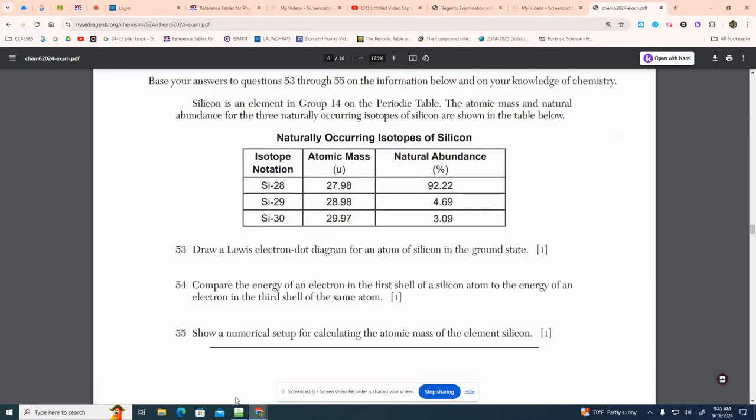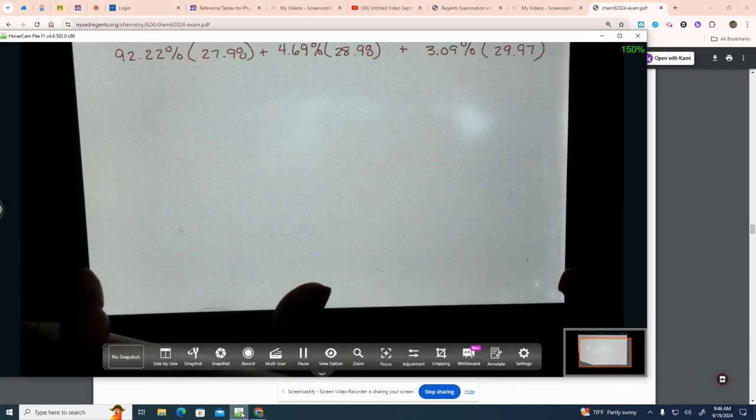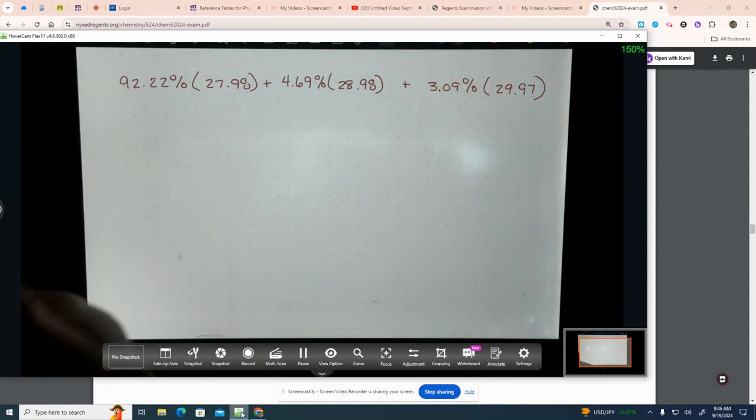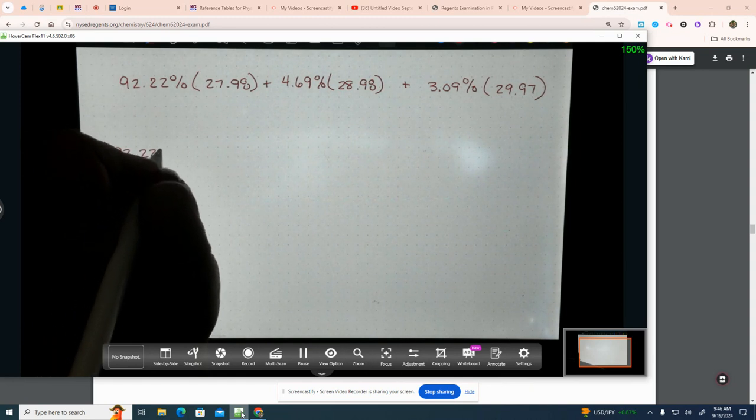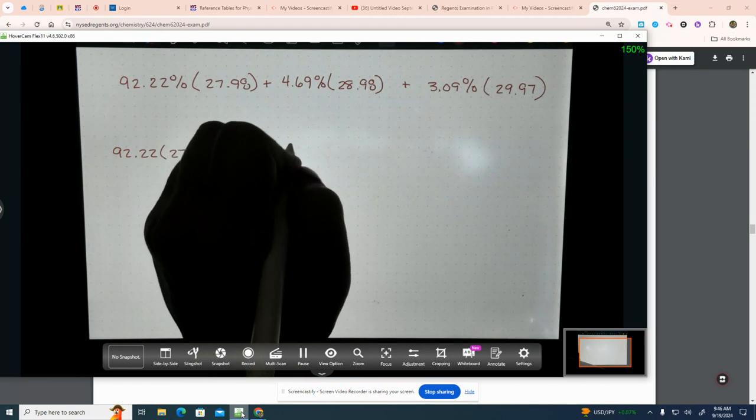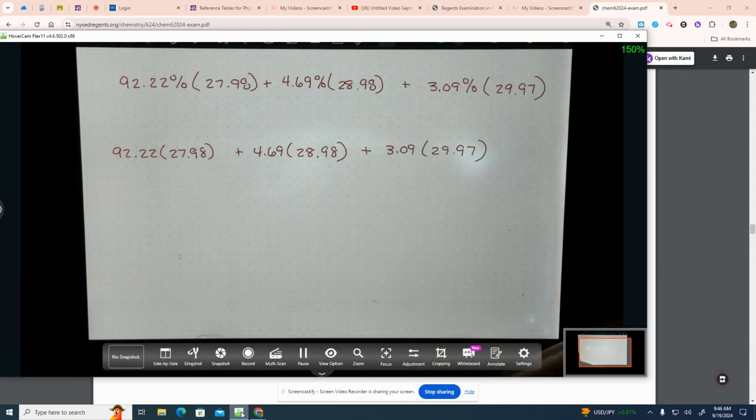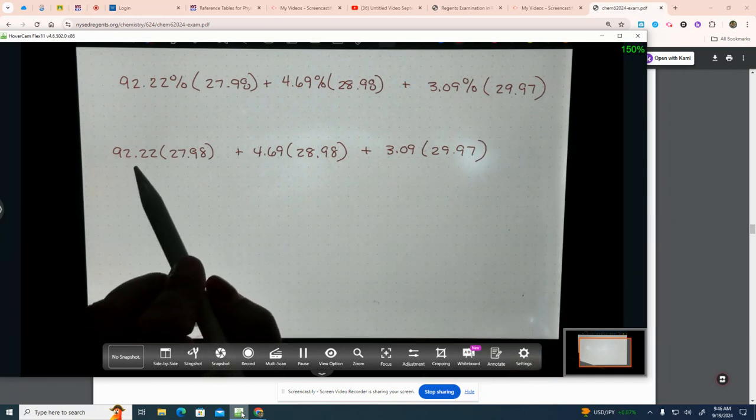Hold on one second. I'm just rewriting it because I want you to see. 92.22% times 27.98 plus 4.69% times 28.98 plus 3.09% times 29.97. I just wrote it across. I want you to be able to see something. Do you see how I left the percent sign here? That is indicating that I did not move that decimal point yet.